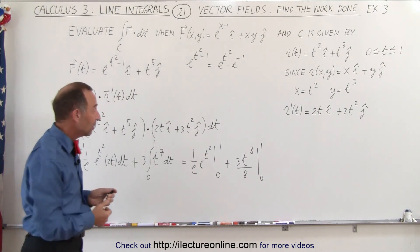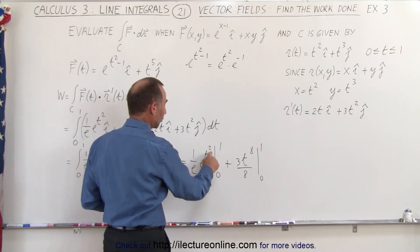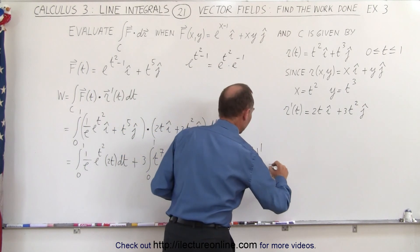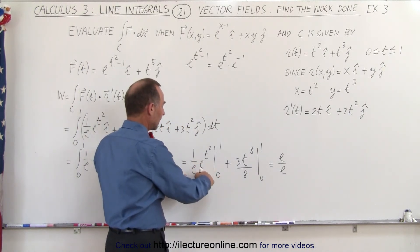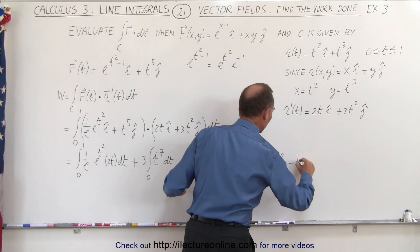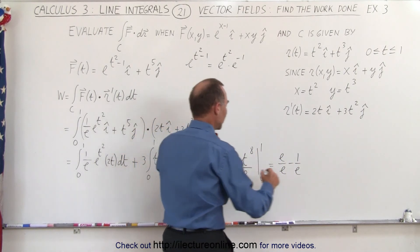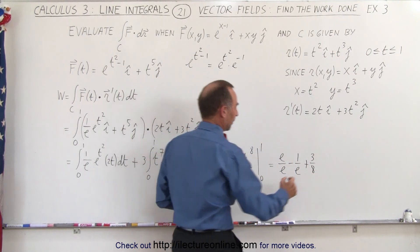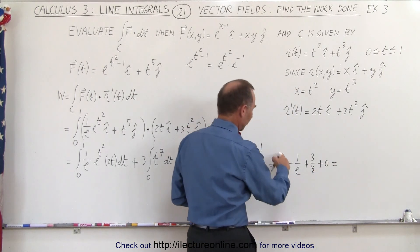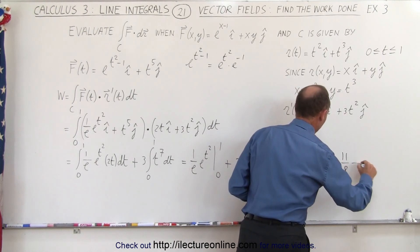Evaluating the limits: for the first term, plugging in the upper limit t equals 1 gives e to the first power, and e to the 1 divided by e equals 1. Plugging in the lower limit gives e to the 0, which is 1, so we subtract 1 over e. For the second term, plugging in the upper limit gives 3 over 8, and the lower limit gives 0. The final answer is 1 plus 3 over 8, minus 1 over e, which equals 11 over 8 minus 1 over e.